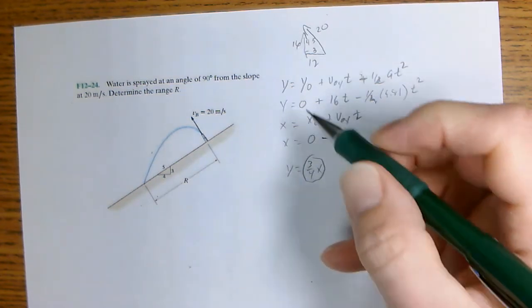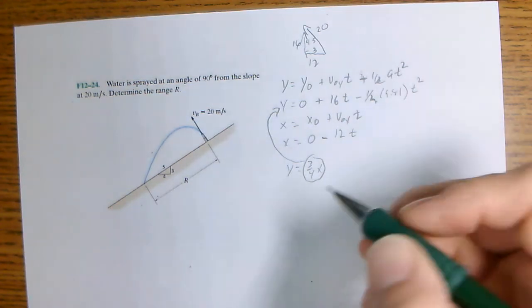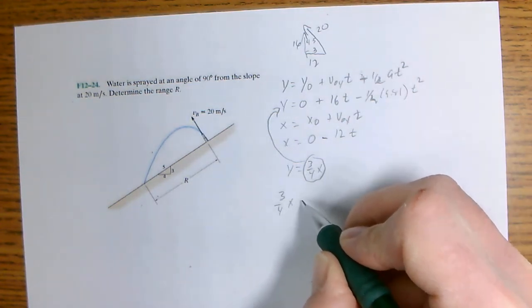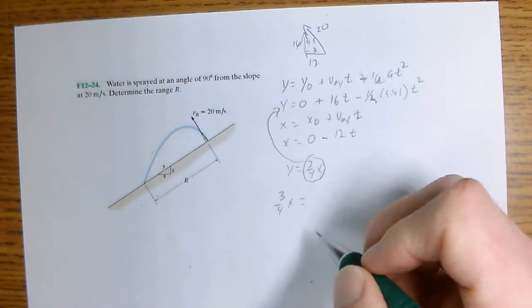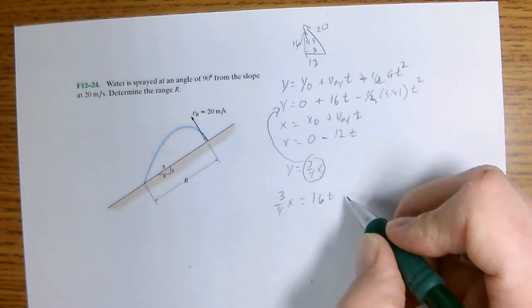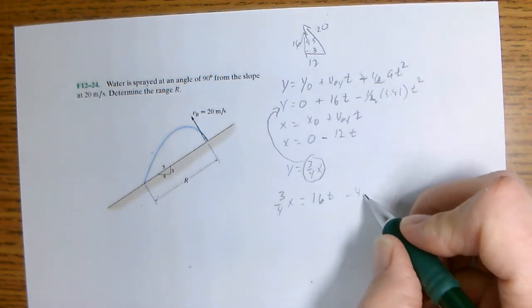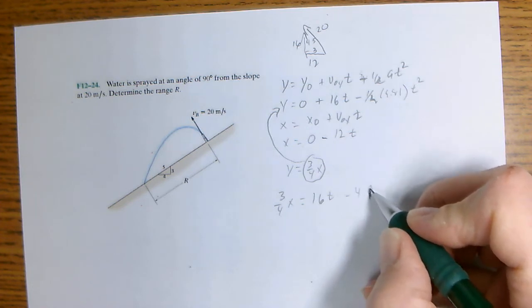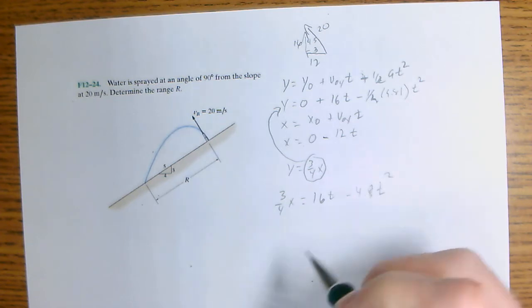So taking this we'll substitute it into here for Y and we get three-fourths X equals 16 T minus one-half times 9.81 is 4.9 T squared. So then we have this equation.